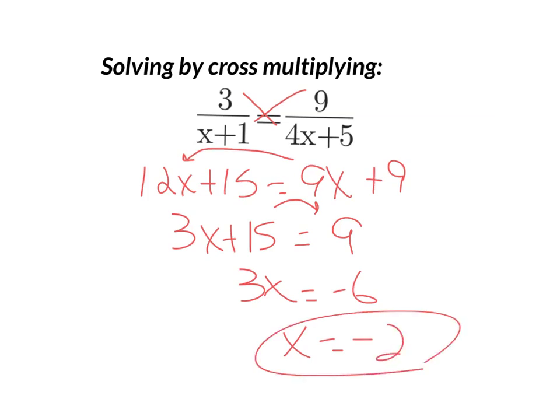And that's really it. Cross-multiply, solve. That's the simplest way to solve rational equations. Sorry, a rational equation - an equation with two fractions in it.